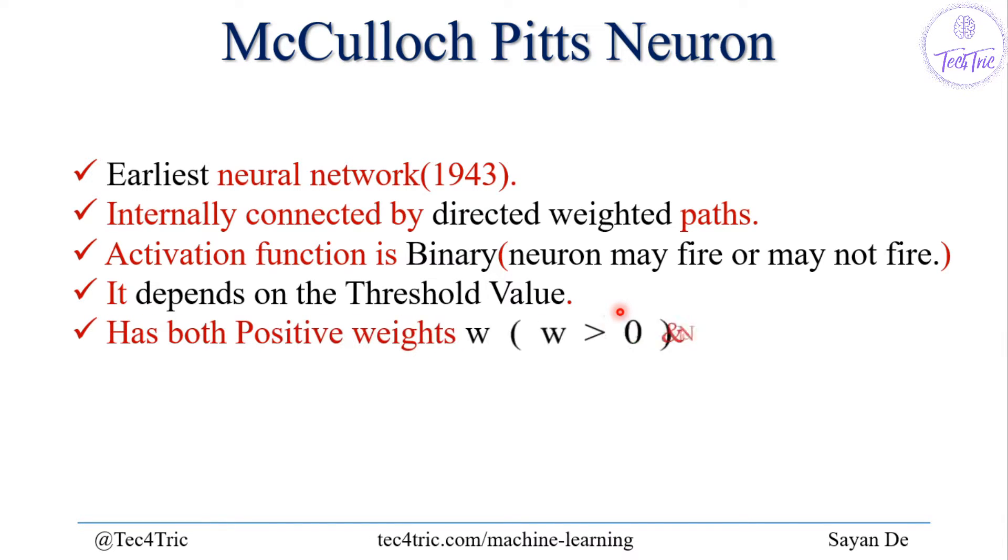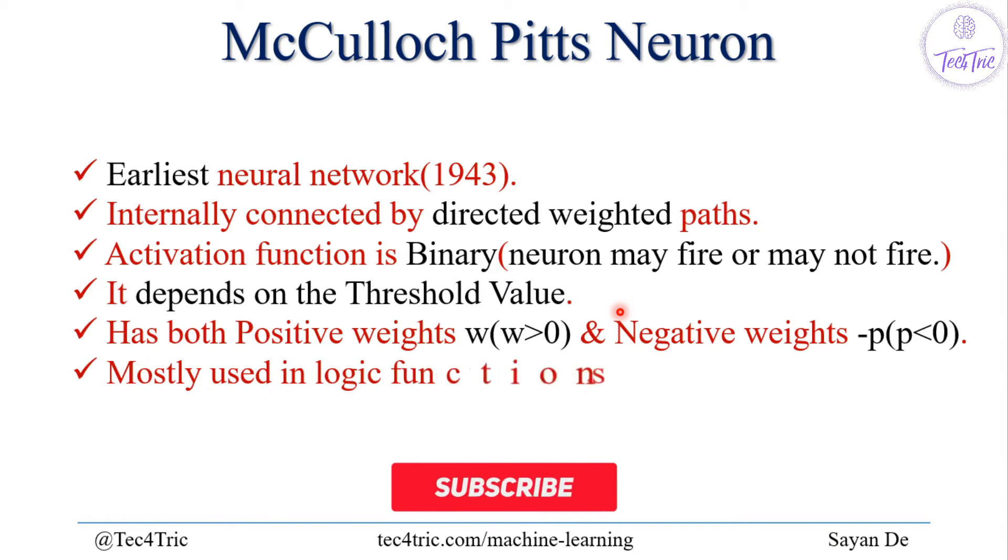It has both positive weights or excitatory weights and negative weights or inhibitory weights. We can represent the positive weights as w where w is greater than 0 and negative weights as minus p where p is less than 0. It is mostly used in logic functions like AND, OR, and NOT.